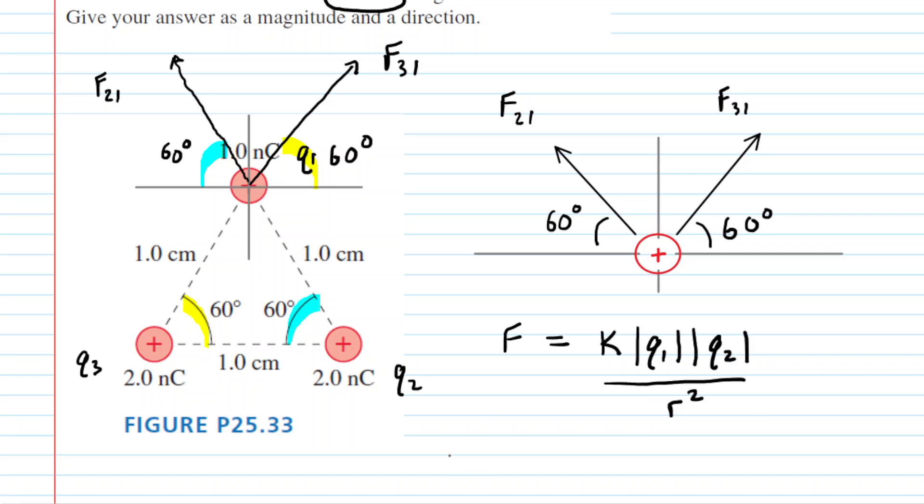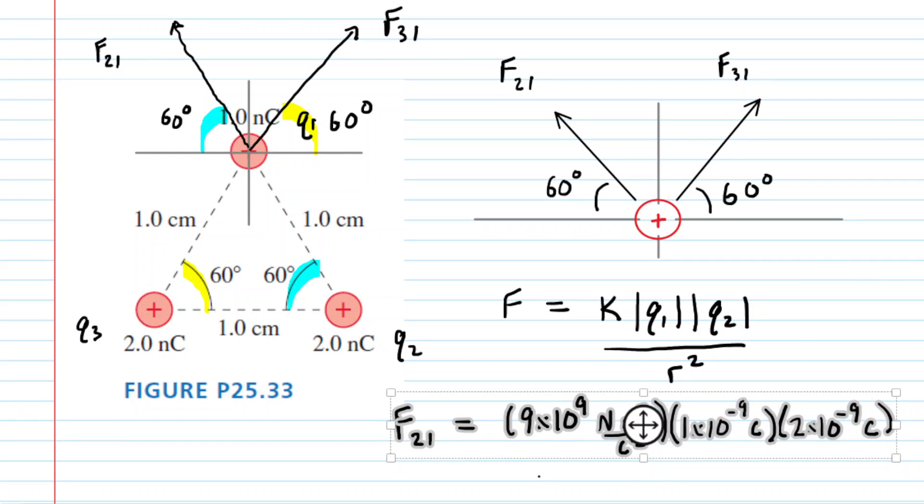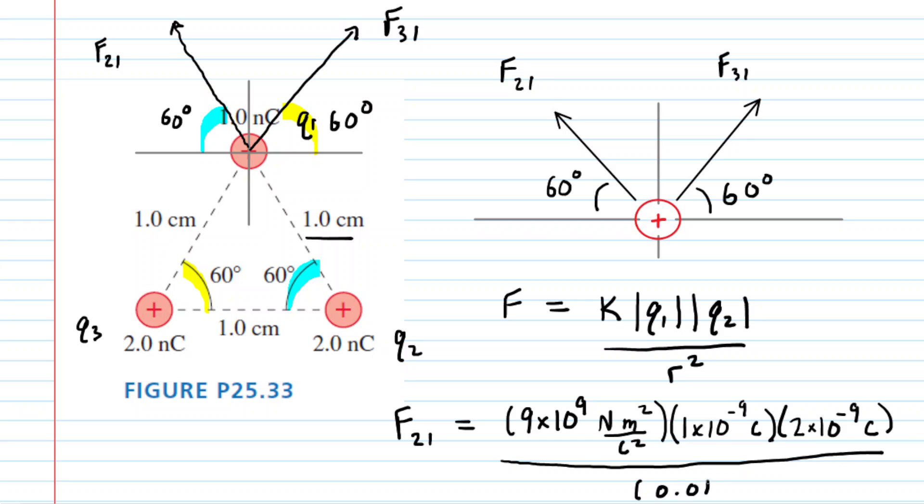For example, if we were to calculate the force that charge two is exerting on charge one, we would fill in the constant, the Coulomb's constant, followed by the magnitude of charge one. Charge one is one nanocoulomb. So be careful here, you're going to want to do one, and because it's nanocoulomb, you will multiply that by 10 to the minus nine. That gets the charge in terms of Coulombs. Then the magnitude of charge two happens to be two nanocoulombs, so here we'll fill in two times 10 to the minus nine. Then we're going to divide that by the distance between charges two and one squared. That distance is one centimeter. Make sure you divide that by 100 to get it into meters, so you'll have 0.01 meters, and don't forget to square it. Let's pick up our calculator and compute that value.